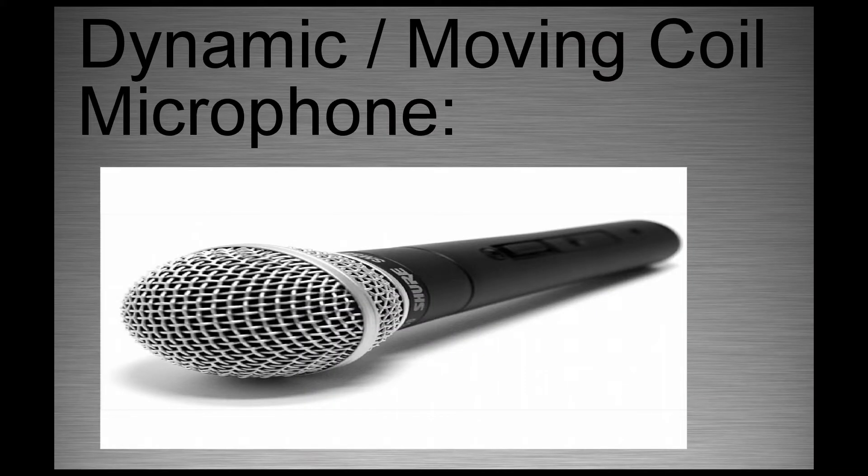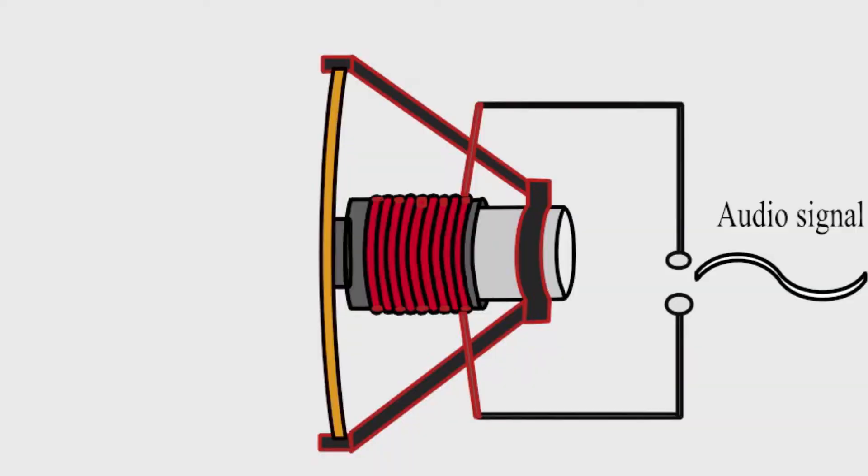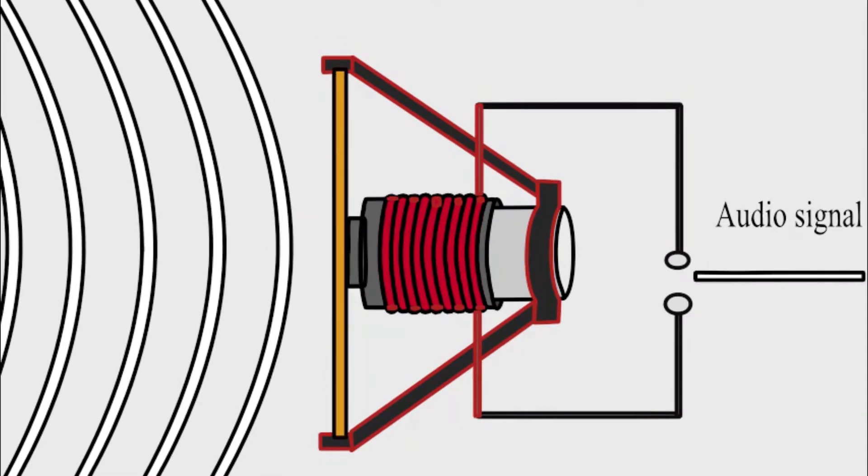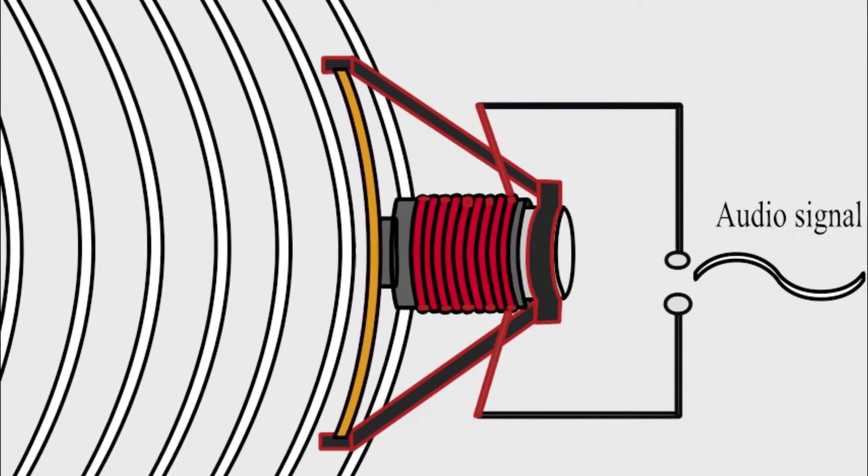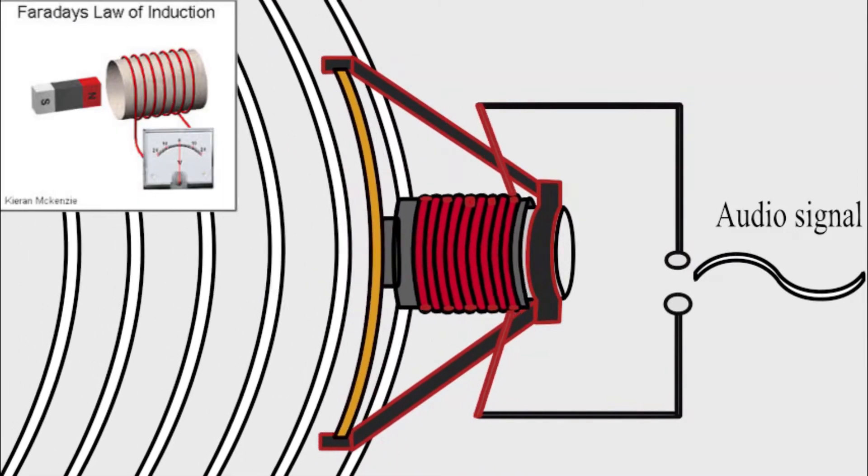Dynamic slash moving coil microphone. As the name suggests, a moving coil microphone is made up of a moving coil that's positioned near a magnetic field of a permanent magnet. When sound wave hits the diaphragm, the coil begins to move back and forth through the magnetic field of the magnet.